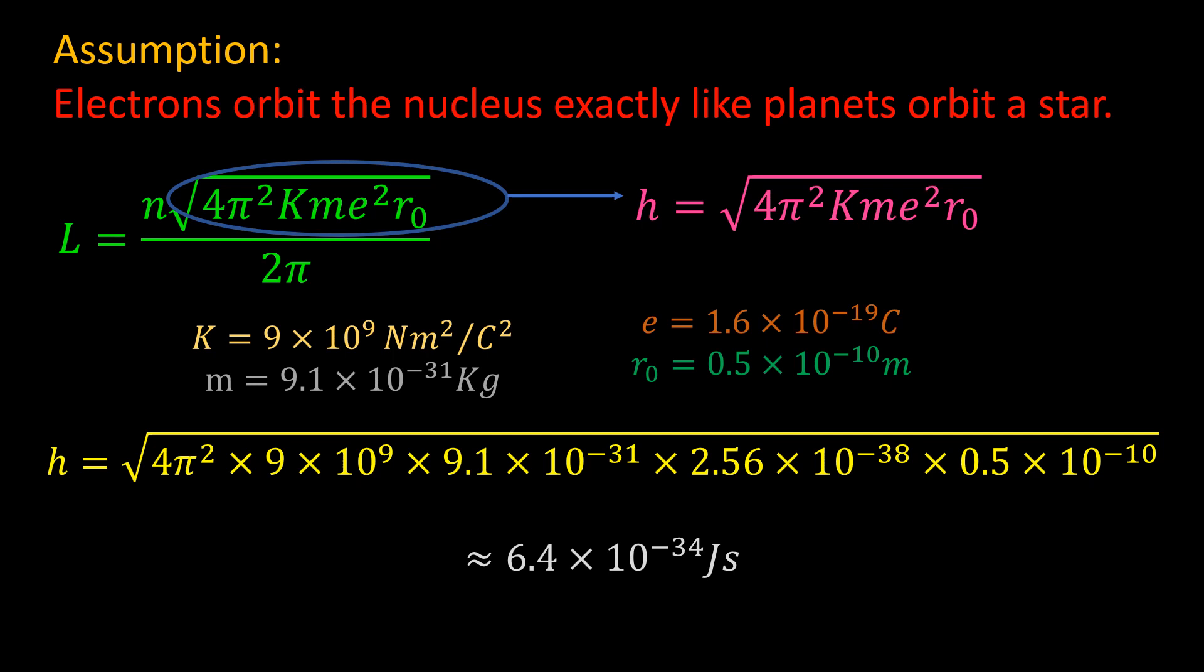Subbing in the values of these constants yields H equal to 6.4 exponential minus 34 joules second. This is the value of the Planck's constant. If you use more accurate values of the constants under the square root, you will have around 6.6 exponential minus 34 joules second. Therefore, we can write the angular momentum as N times H on 2 pi. This is the Bohr formula for the hydrogen atom, showing the quantization of angular momentum.